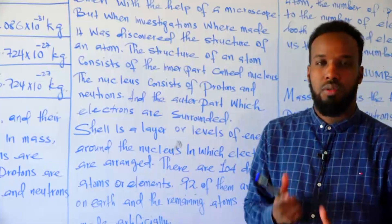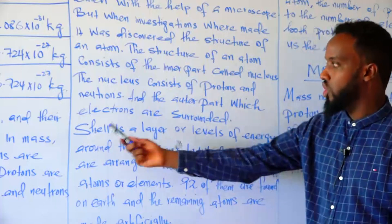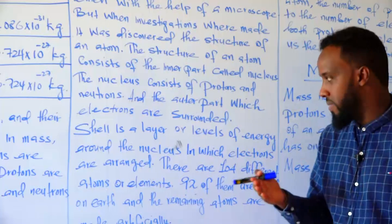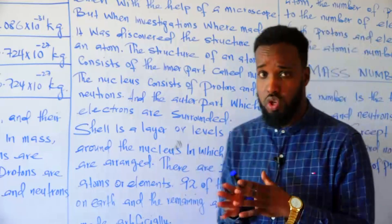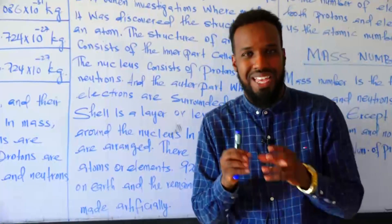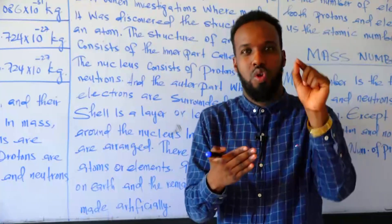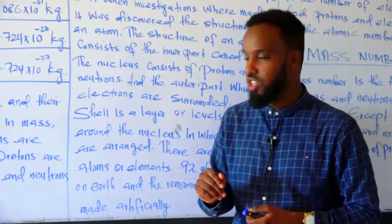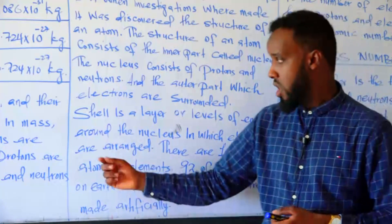What is a shell? A shell is a layer, or level of energy around the nucleus, in which electrons are arranged.